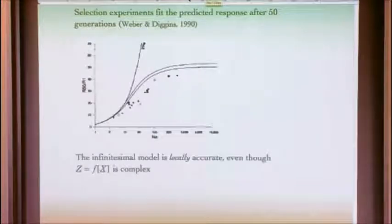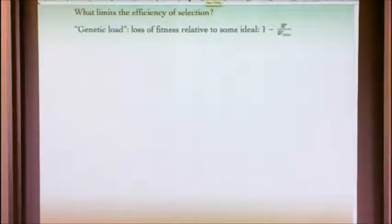We have this nice model for quantitative genetics which seems to be locally accurate, accurate in the short time scale, even though we know that the mapping between traits and genotype is very, very complex. Back to the question I started with: what limits the efficiency of selection? This question had been asked primarily by using various kinds of load arguments.